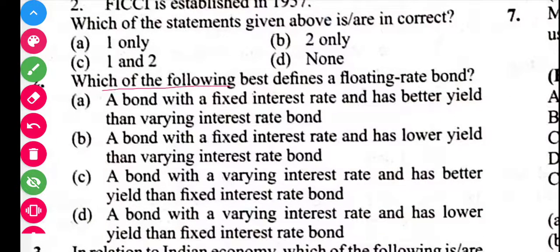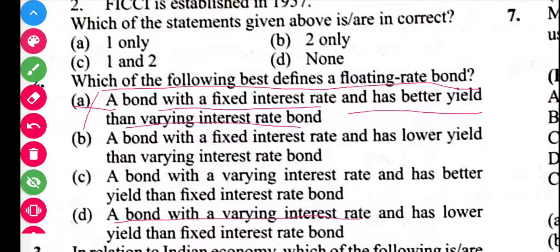Next question: which of the following best defines a floating rate bond? A bond with a fixed interest rate and better yield than varying interest rate is not the answer. A floating rate bond is a bond with a varying interest rate and has a lower yield than the fixed interest rate bond. So the answer is D.